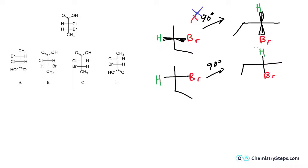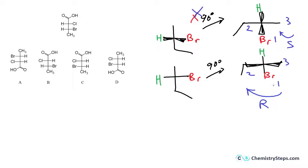In the Fischer projection after 90-degree rotation, it presumes these two are the wedge lines and these are the dash lines — but notice that in the original we have the opposite. We can confirm this using R and S configuration: going 1, 2, 3 clockwise with the groups pointing toward you gives S in one case and R in the other, confirming that a 90-degree rotation changes the configuration of the stereocenter.